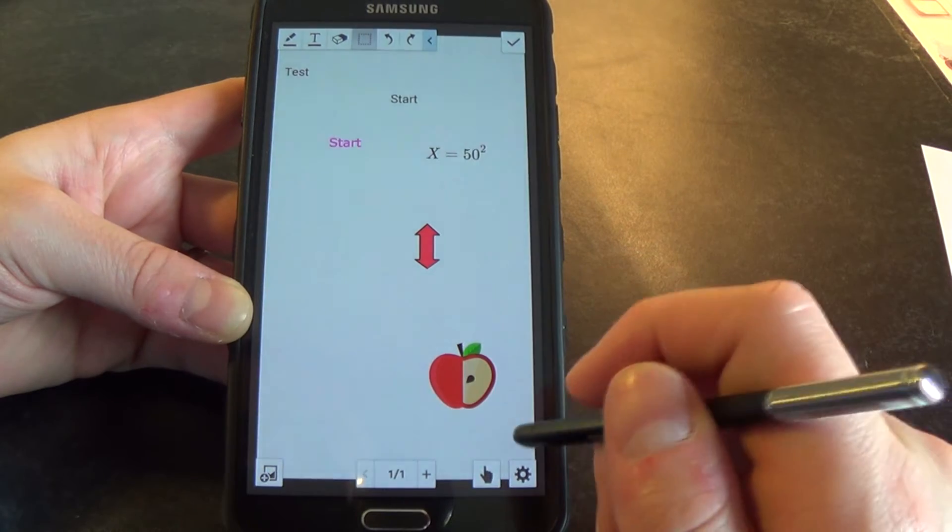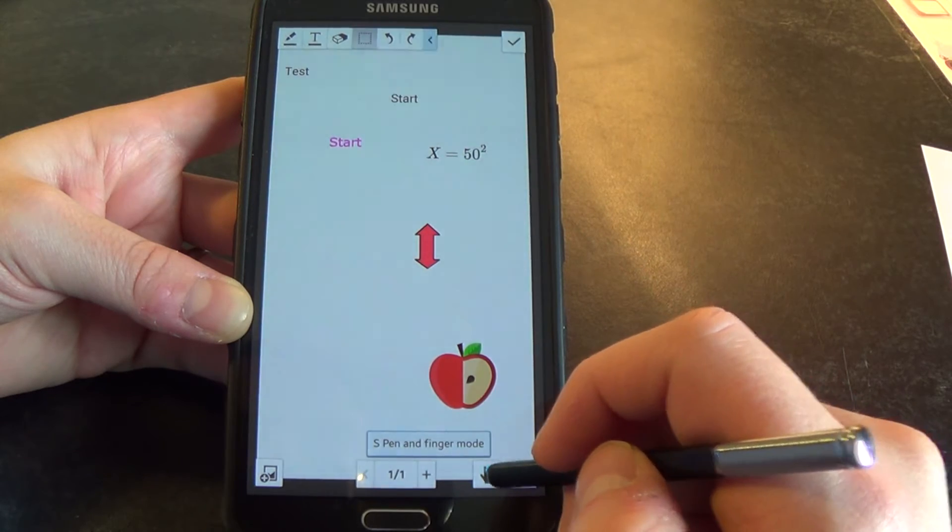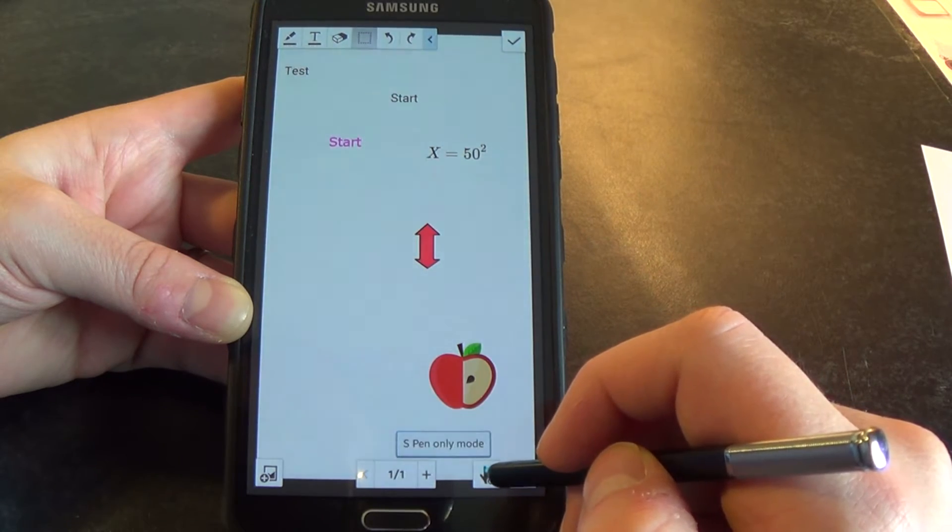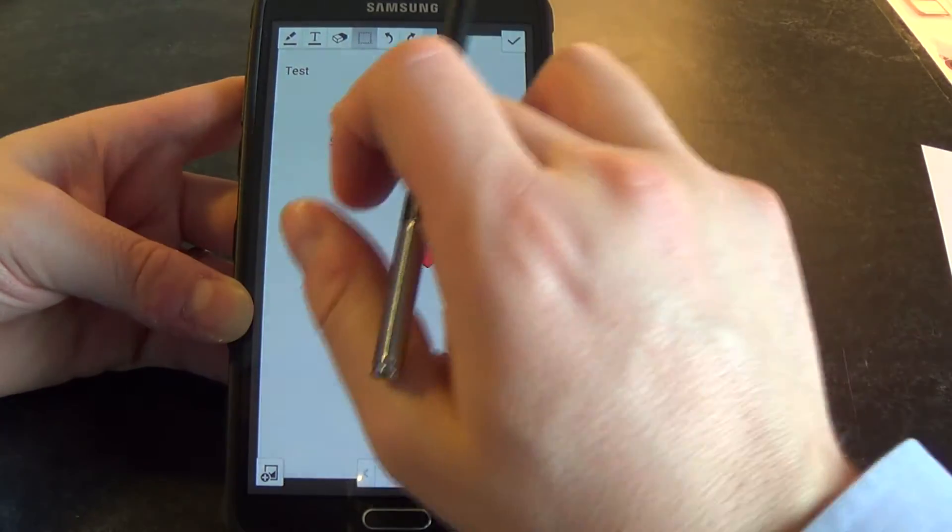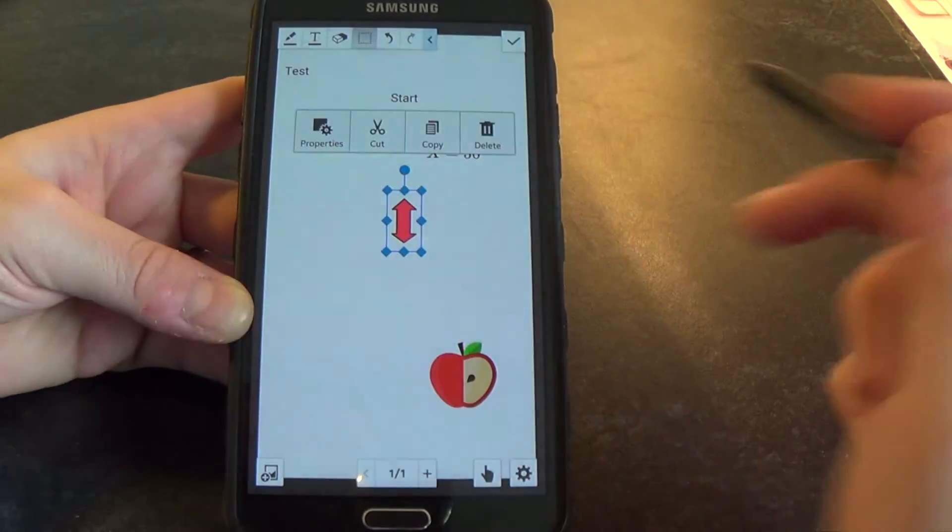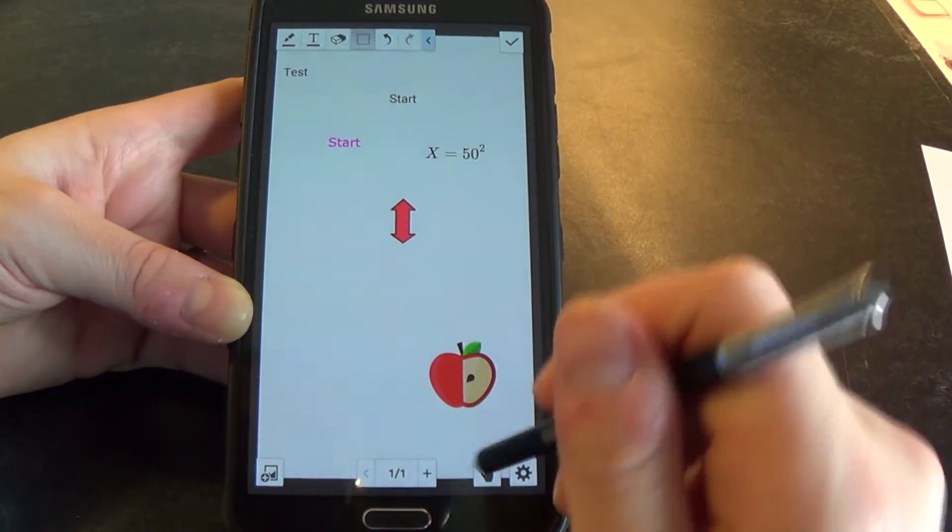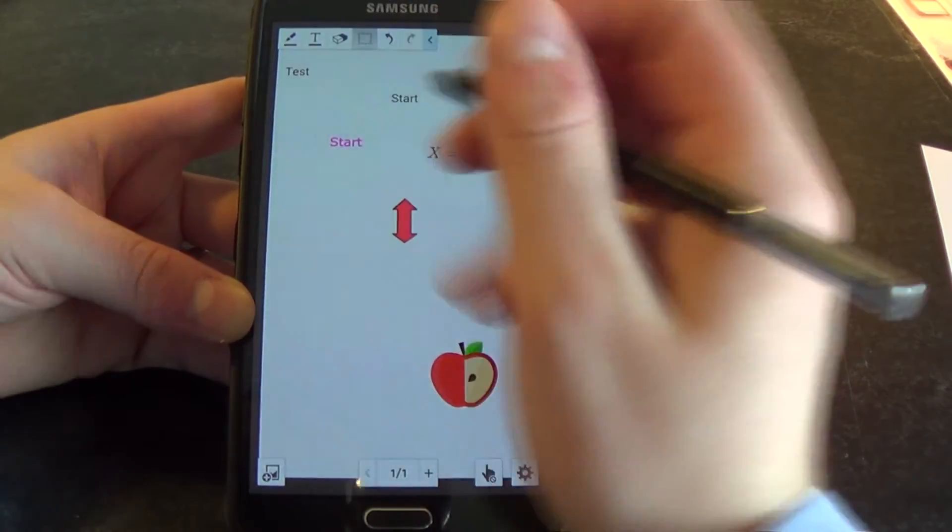Down at the bottom here you've got S Pen and finger mode, which toggles to S Pen only. So when it's S Pen only, you can do nothing with your fingers. And when you enable S Pen and finger, you can drag stuff around with your finger. But I find it's better to go with S Pen only because then you're not worried about touching the screen with your hands.